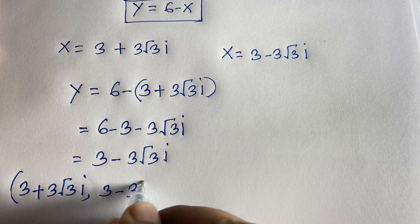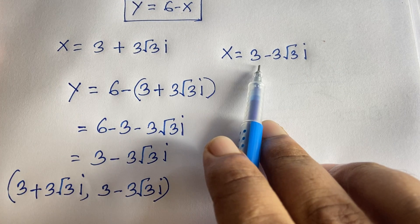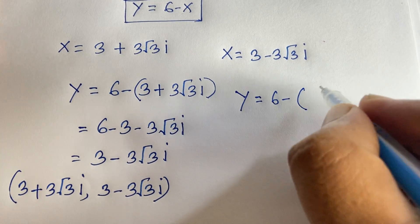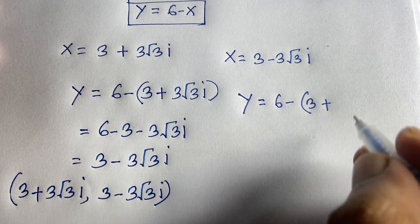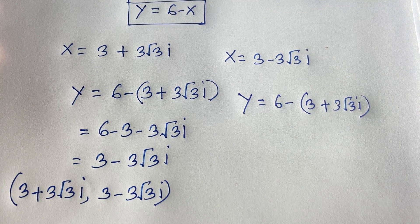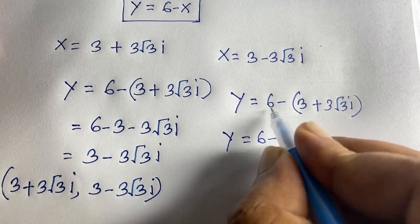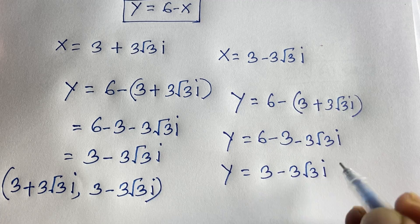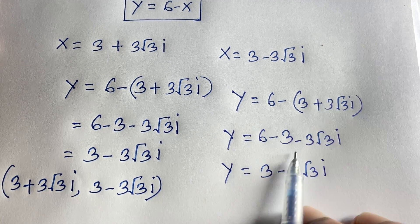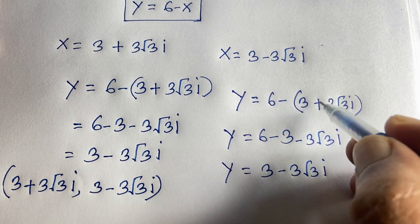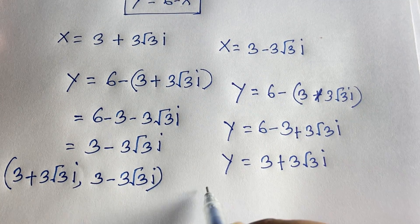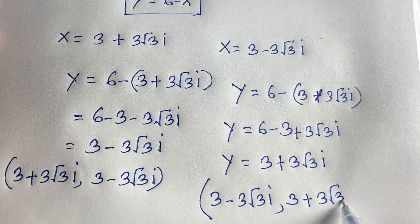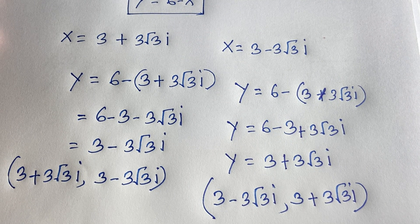For the other case, when x equals 3 minus 3 root 3 times i, then y equals 6 minus (3 minus 3 root 3 i), which gives y equals 3 plus 3 root 3 times i. So our two solution pairs are: x equals 3 plus 3 root 3 i with y equals 3 minus 3 root 3 i, and vice versa. Thank you all — if you enjoyed this video, please subscribe. Goodbye, take care.